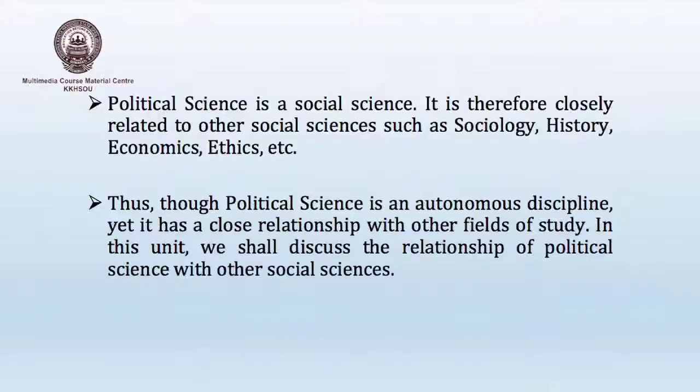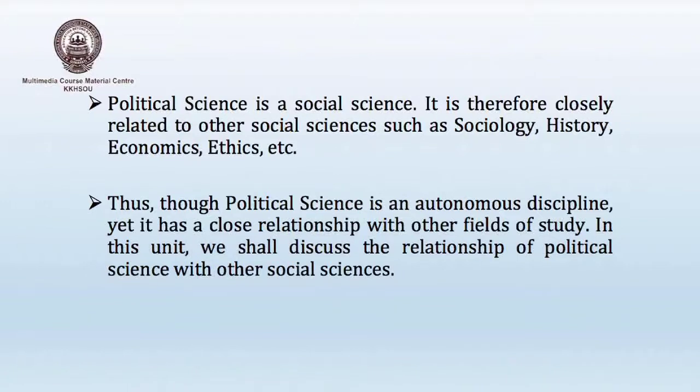Hello learners, welcome to this discussion on the relationship of political science with other social sciences. This discussion pertains to unit 2 of the course political theory part A from the BA first semester program in political science. Political science, being a social science, is closely related to other social sciences such as history, economics, sociology, psychology, ethics, etc. Political science is an autonomous discipline, yet it has a very close relationship with other fields of study like economics, history, sociology, psychology, anthropology and ethics.